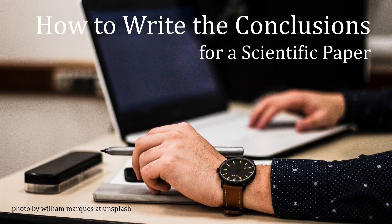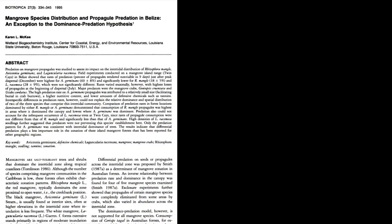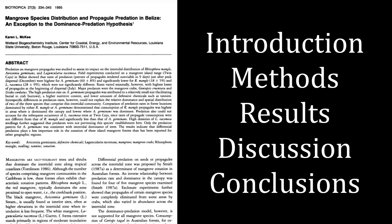Hi, this is Karen McKee, retired scientist and author. As most of you know, a typical scientific paper follows a formal structure with five main sections: Introduction, Methods, Results, Discussion, and Conclusions, plus Abstract and References.